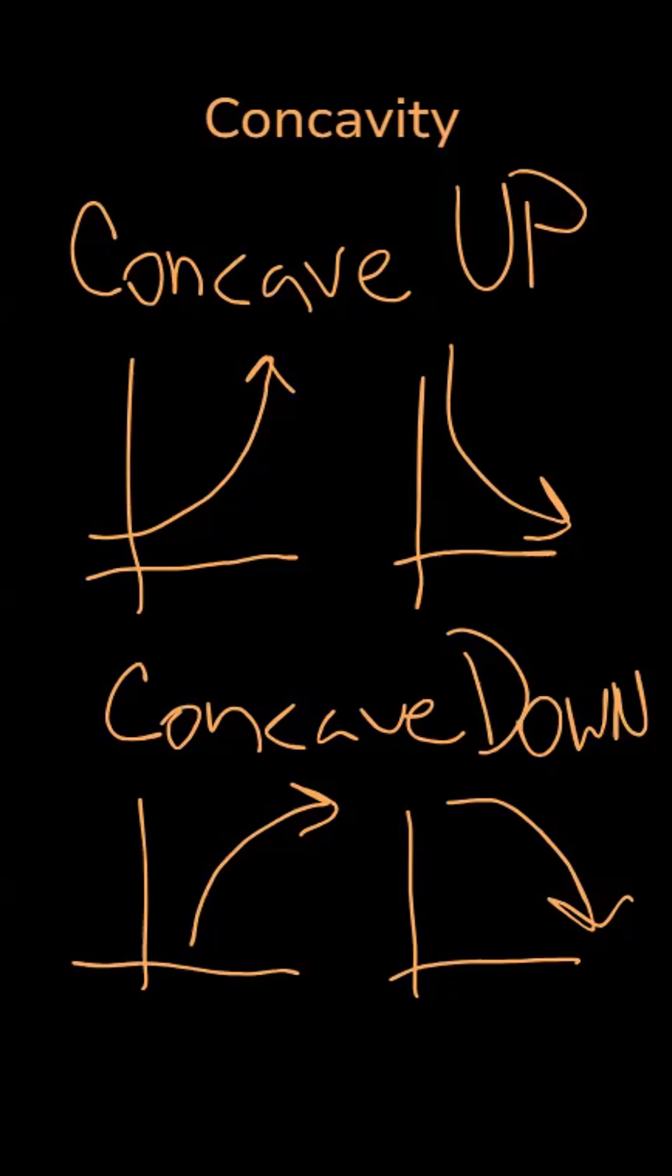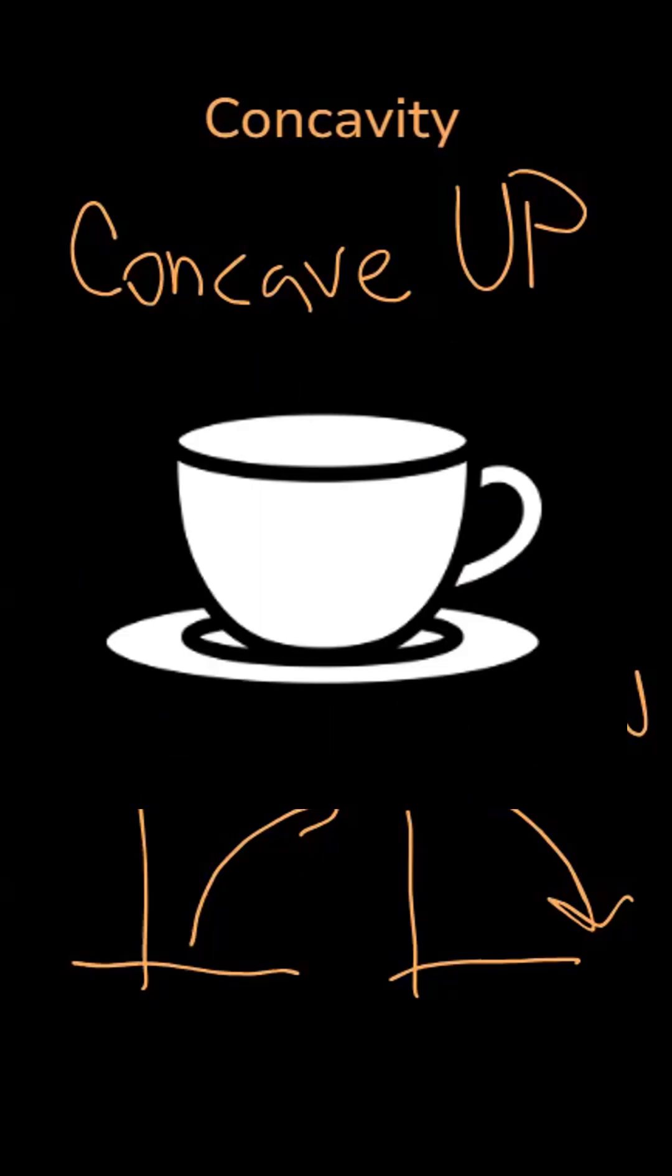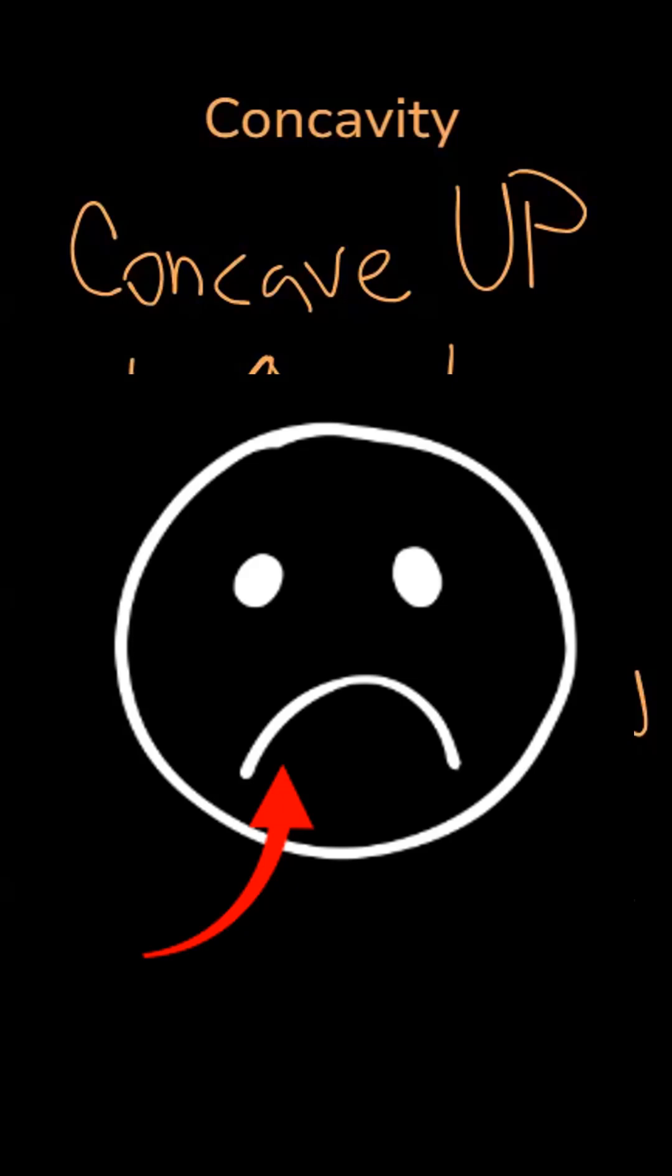An easy way to remember this is concave up, the graph looks like a cup. Concave down, the graph looks like a frown.